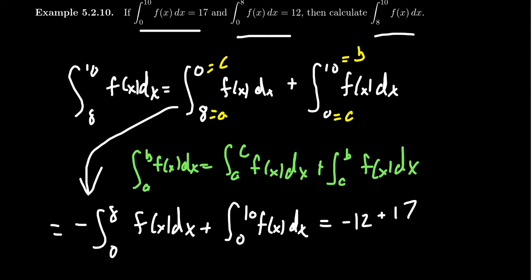And so we can see that 17 take away 12 is going to equal 5, which is the integral right here. So using those properties of integration can be very helpful in calculating these integrals, and a similar calculation we see right here.